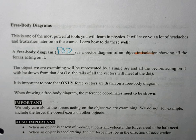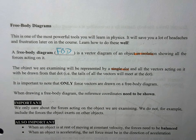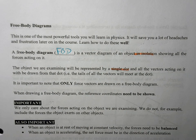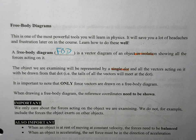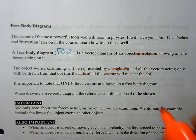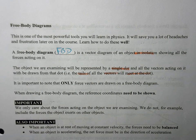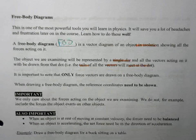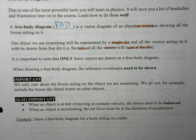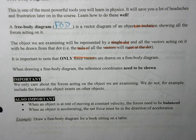The object we're examining — whether it's a person, a car, a flying pig — it doesn't really matter what it is. It's going to be represented by a single dot. Everything in the world can be condensed down to a single dot. We're going to show all the vectors acting on that object only, with all the tails of those vectors meeting at the dot. The critical thing — it's super important with free body diagrams — you only draw force vectors on the diagram. We don't draw acceleration, velocity, or any of that stuff. It's strictly for forces.